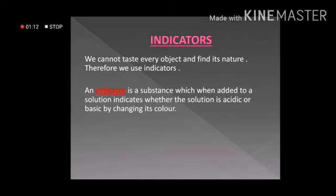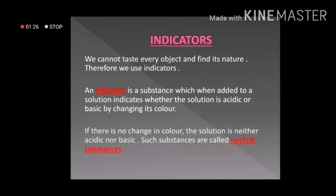An indicator is a substance which, when added to a solution, indicates whether the solution is acidic or basic by changing its color. There are many indicators available. But if the color of the solution does not change after adding an indicator, it is possible that the substance is neither acidic nor basic. Such substances which are neither acidic nor basic are called neutral substances.